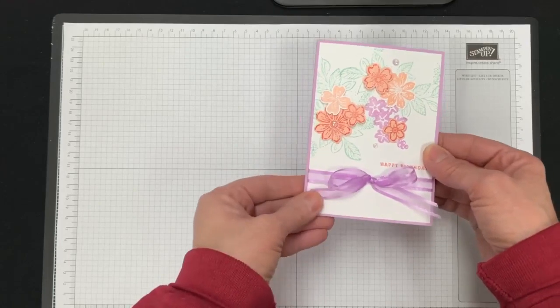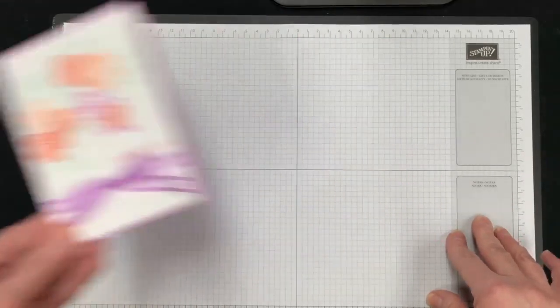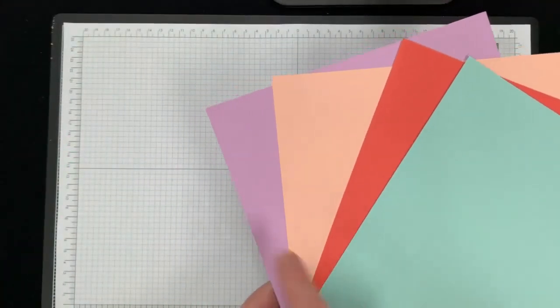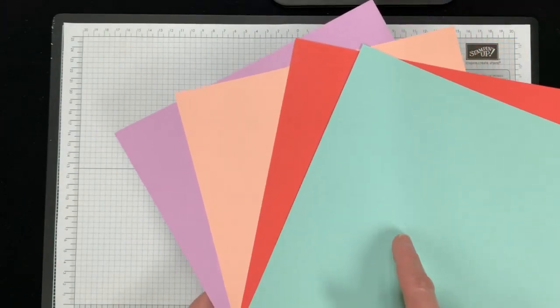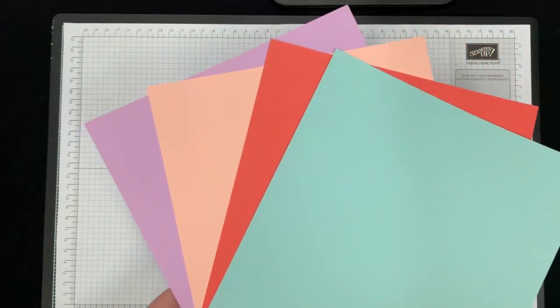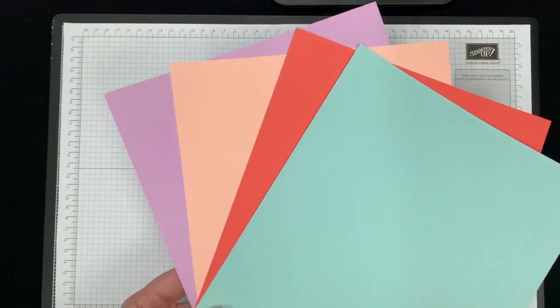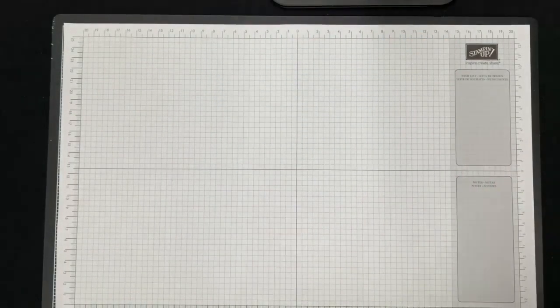But first I want to start with my color combo. Of course I used basic white in there, and then I also used fresh freesia, petal pink, calypso coral, and pool party. So these are all nice spring colors together for my color palette.